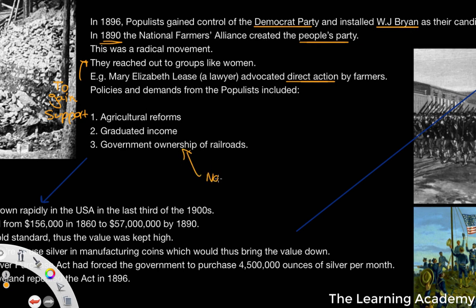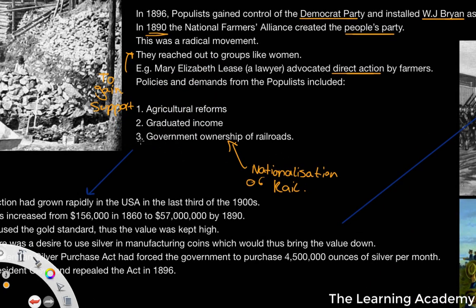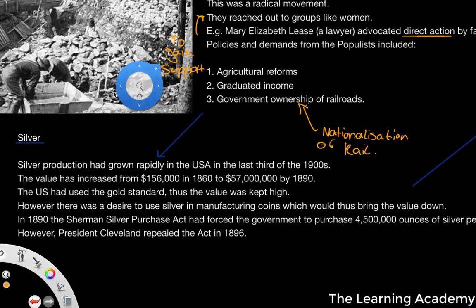The populists also demanded government ownership of railroads — the nationalisation of rail. When it's government owned, that means the government can regulate it. If railroads were privatised, you have private companies and private individuals that have influence over the regulation of the rail. The populists wanted to see a nationalisation of the railroads and government ownership of rail.